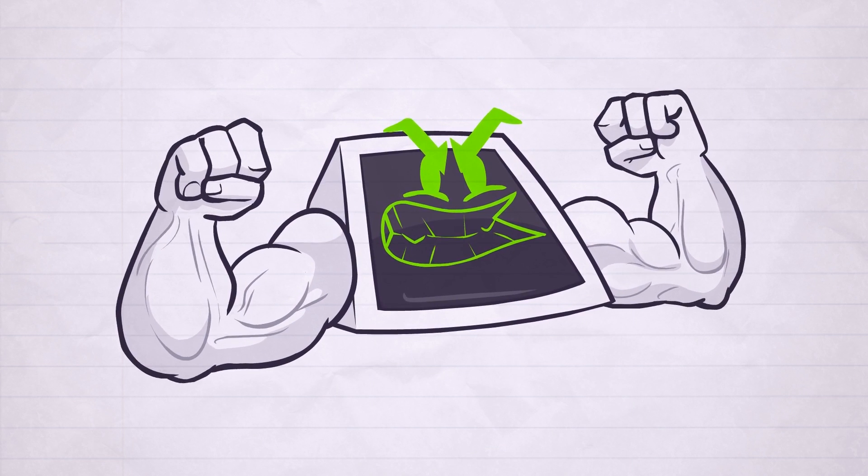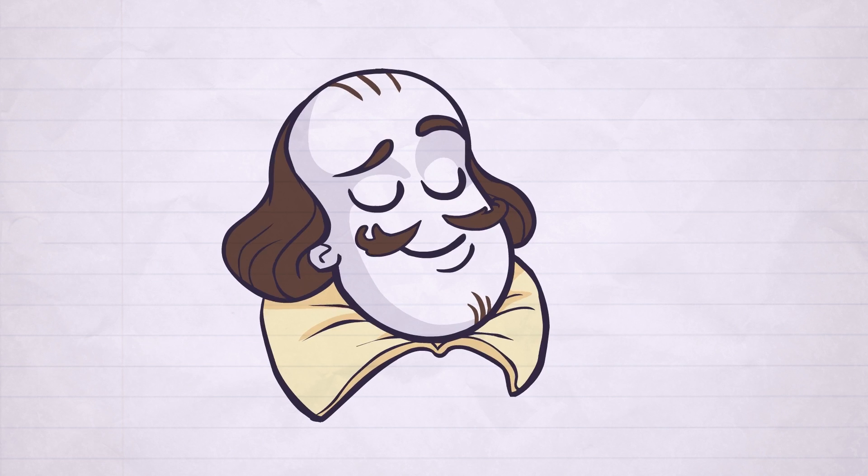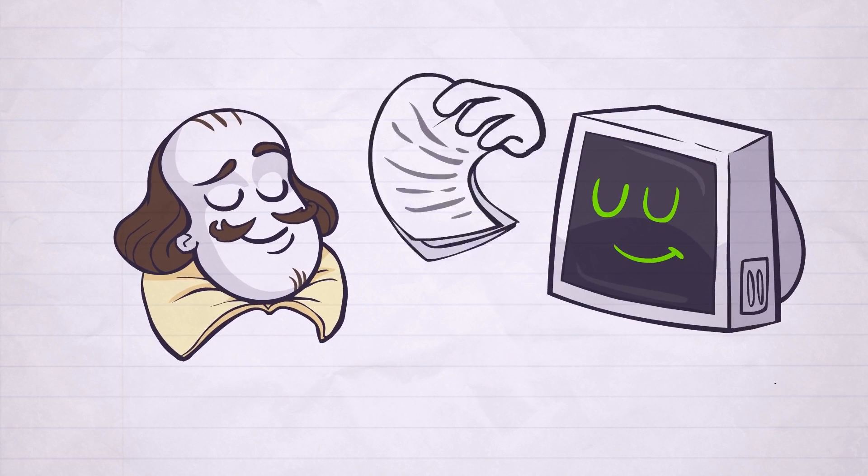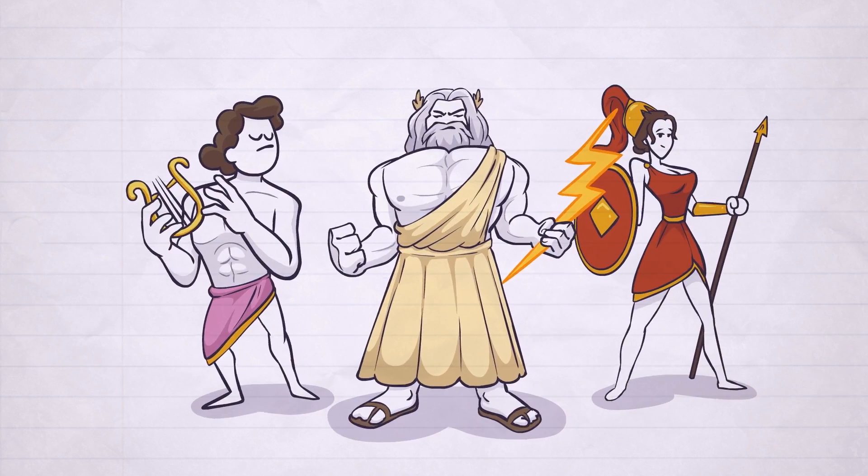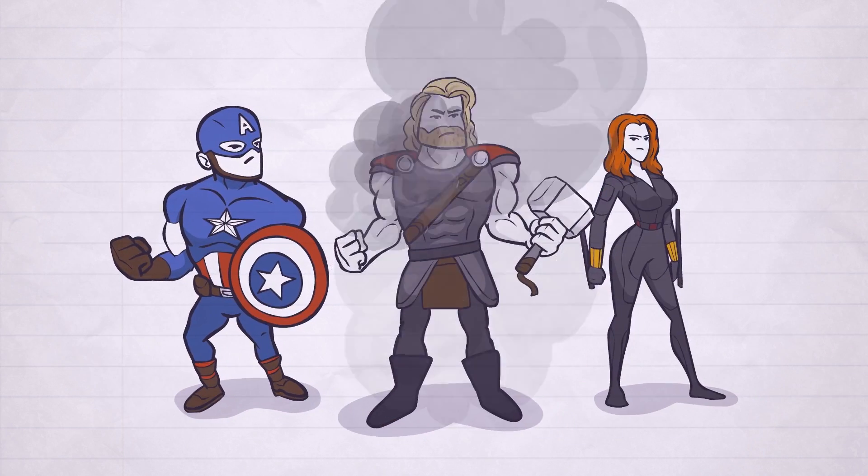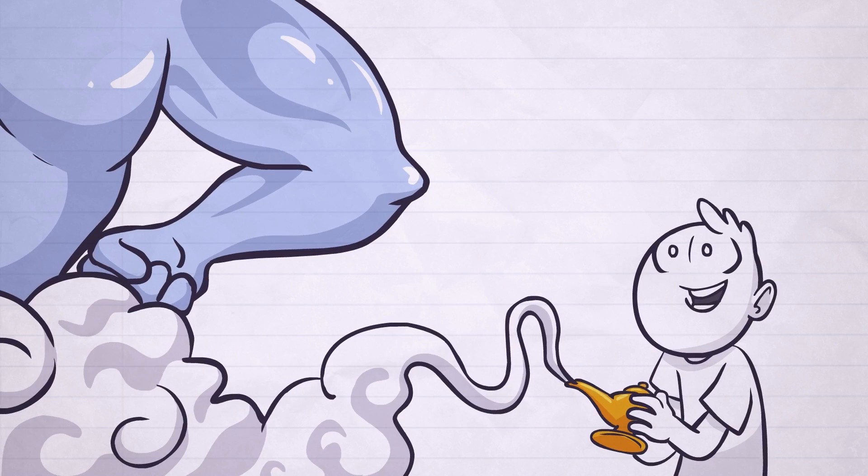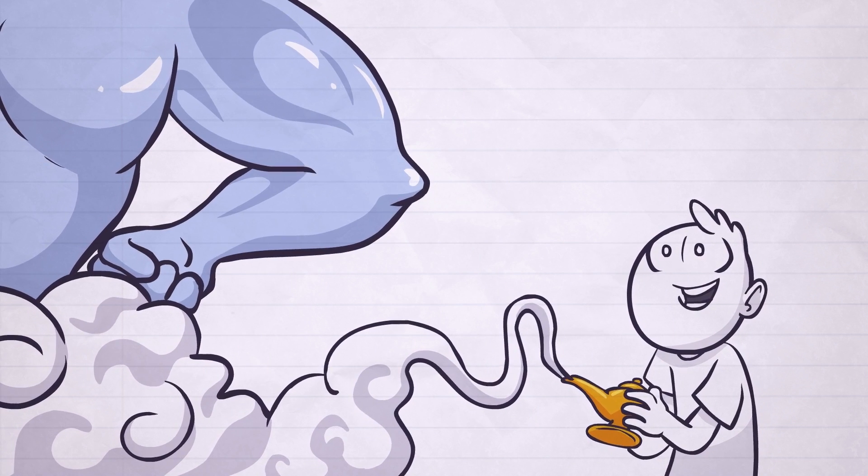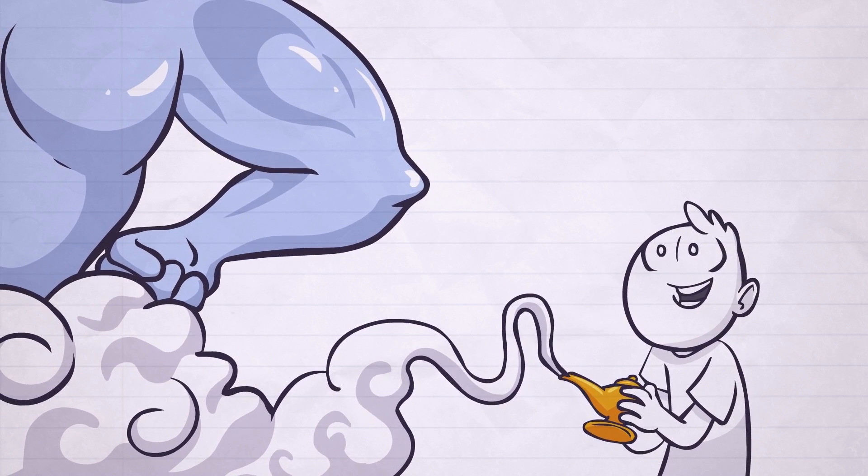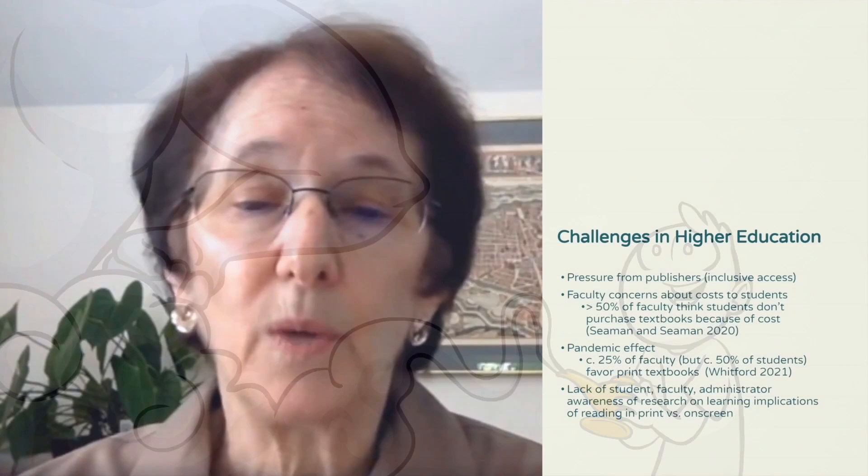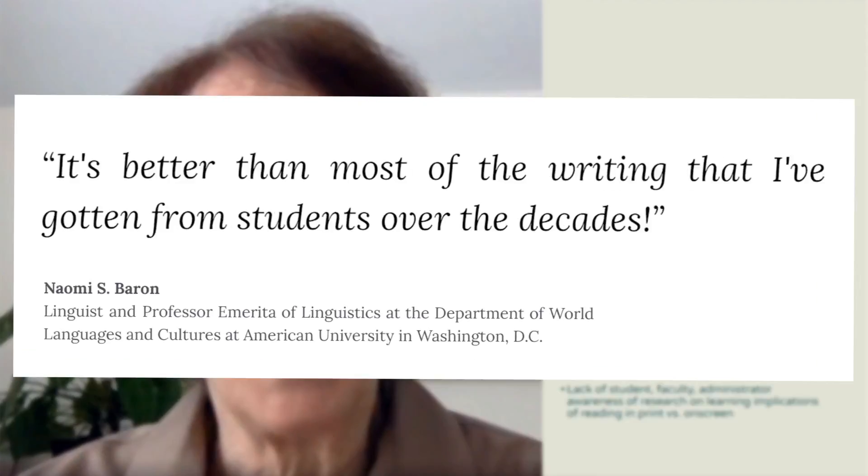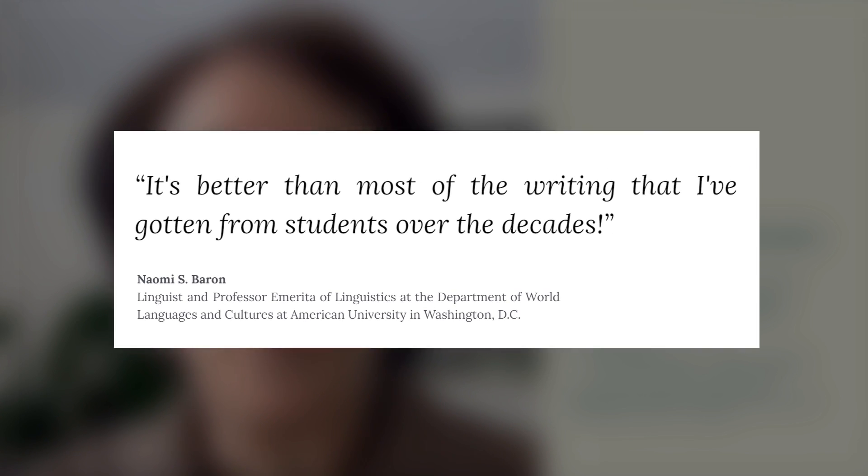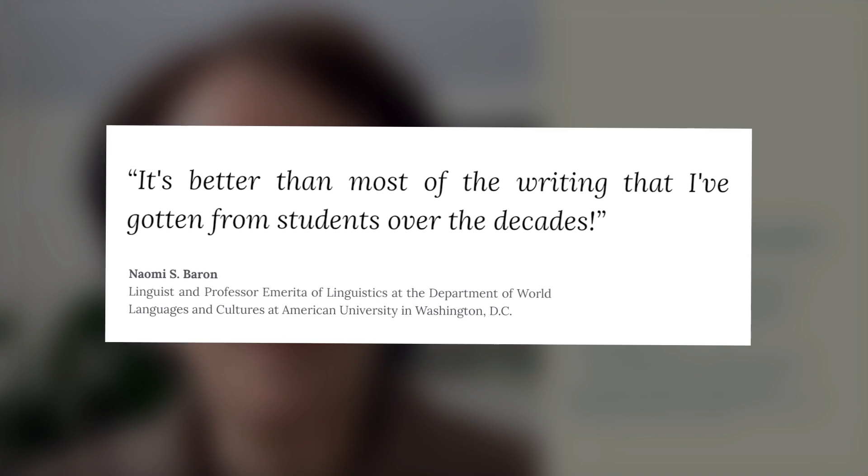One of ChatGPT's strong points is that it's capable of summarizing and reinterpreting text. You can ask it to break down Shakespeare's works in a 10-page essay, or write a dissertation on the parallels between ancient mythology and the Marvel Cinematic Universe. This has obviously given students an insanely powerful tool to trick the academic grading system. Linguist and Professor Emerita of Linguistics, Naomi Barron, has praised ChatGPT for how good it is at writing. She states that, it's better than most of the writing that I've gotten from students over the decades.